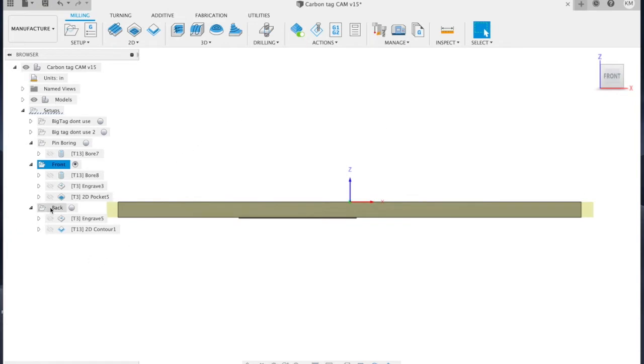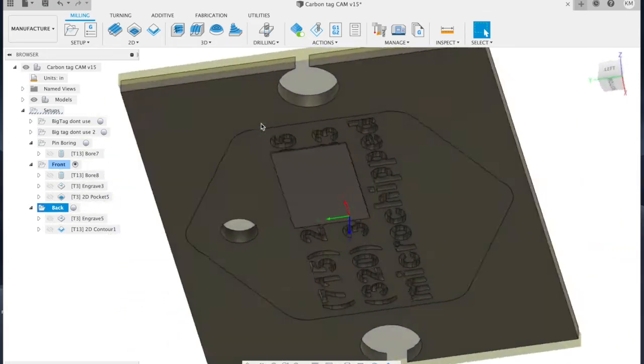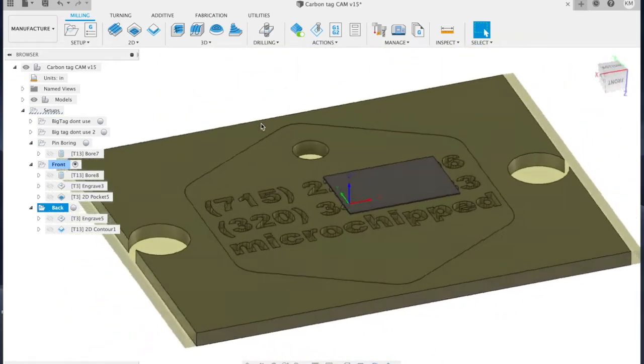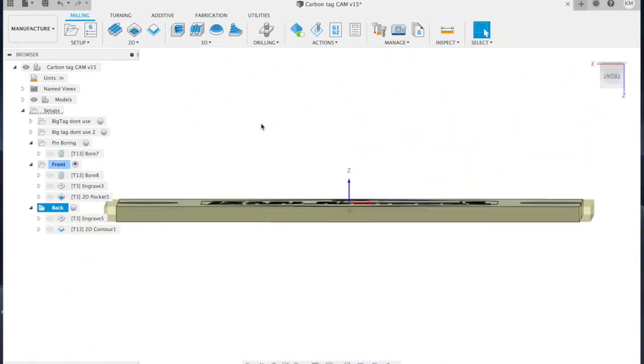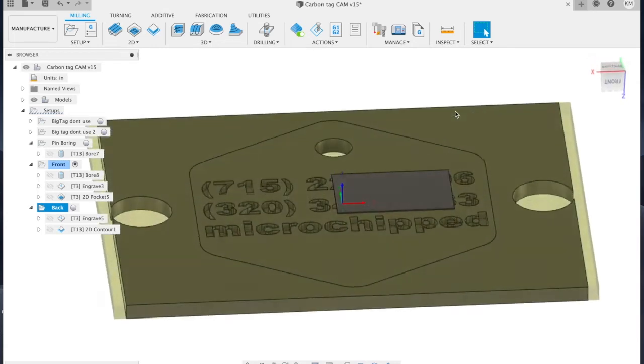To program the back side machining, we need to change the zero reference as if we were flipping the stock. In this case, I will flip about the Y axis. So we again set our zero point at what is now the top center of the stock, but we will need to flip the X and the Z axes to make sure they are pointing in the right direction.